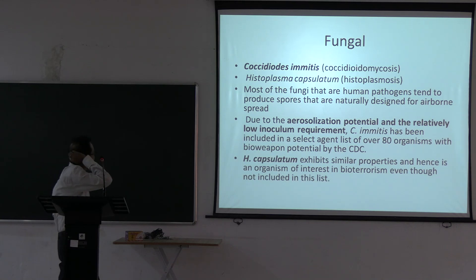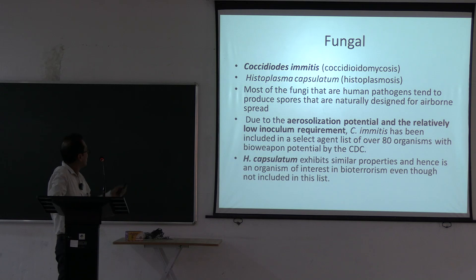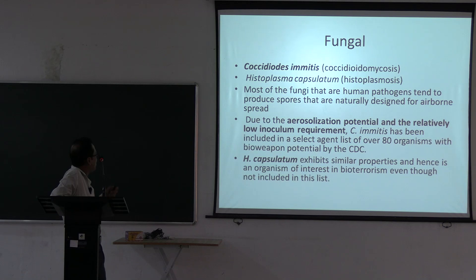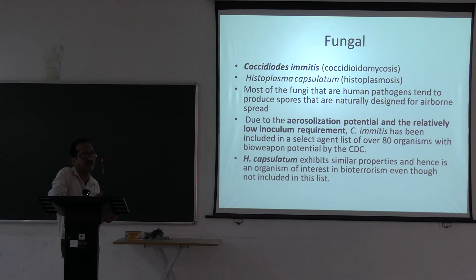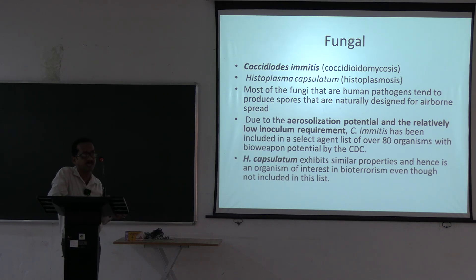Fungal agents include Coccidioides immitis and Histoplasma capsulatum. These are human pathogens that tend to produce spores naturally designated for airborne infection. Coccidioides immitis is included in the CDC's list of 80 organisms that can be used as biological weapons. Histoplasma capsulatum, though not on that list, can also potentially be used as a biological weapon.